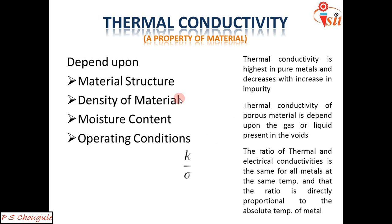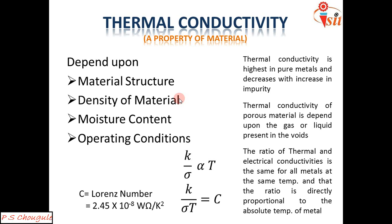This relationship is expressed as K/(σ·T) = C, where K is thermal conductivity, σ is electrical conductivity, and T is absolute temperature. The constant C is the Lorentz number, equal to 2.45 × 10⁻⁸ Watt·Ohm per Kelvin squared.